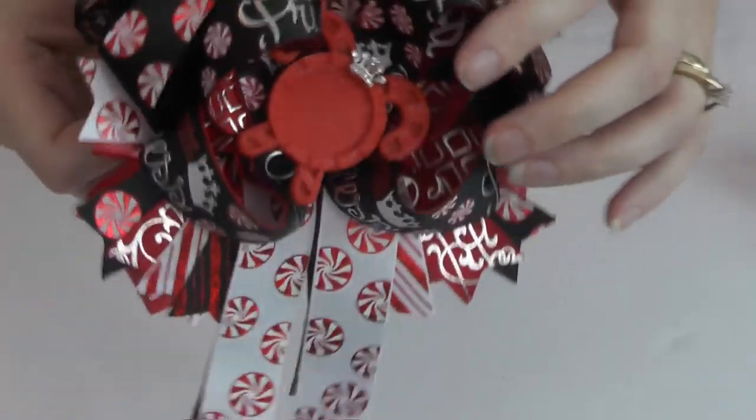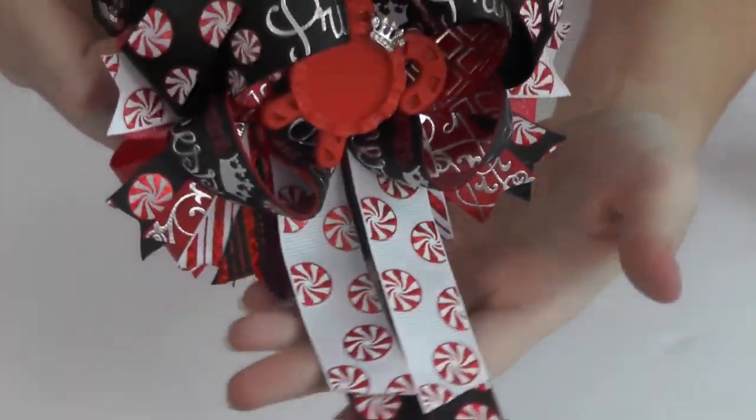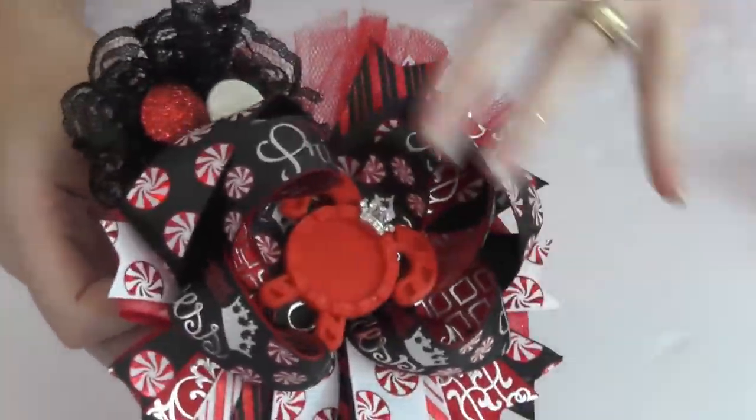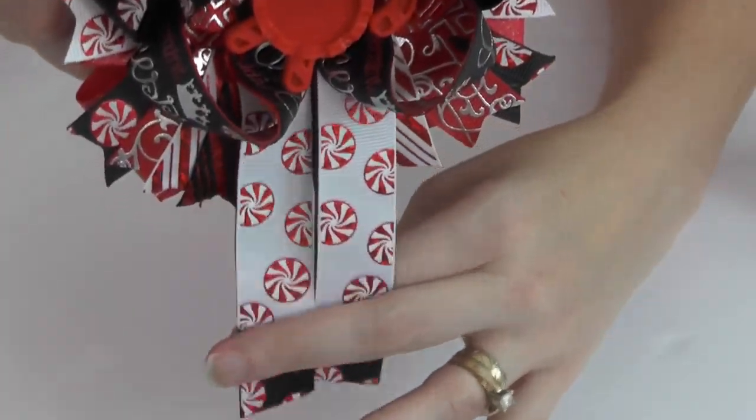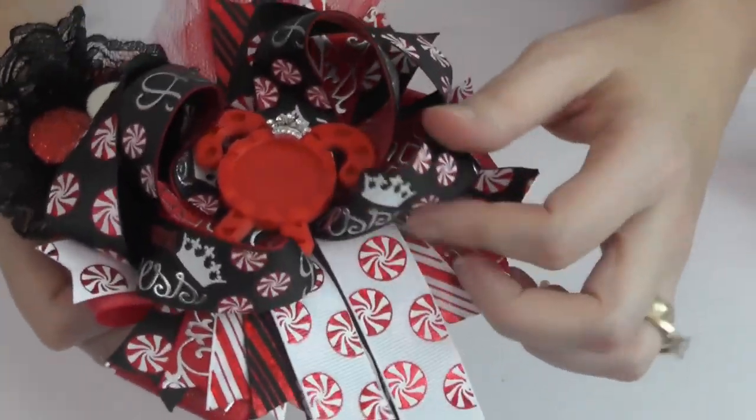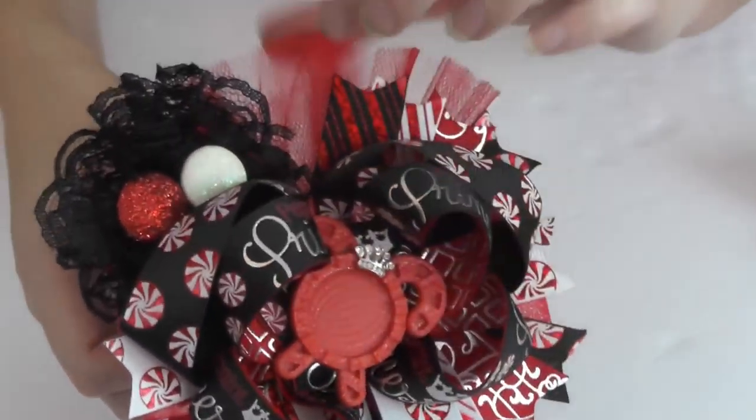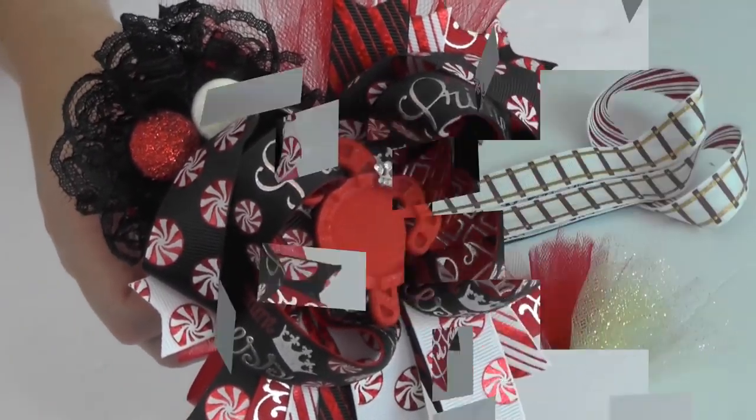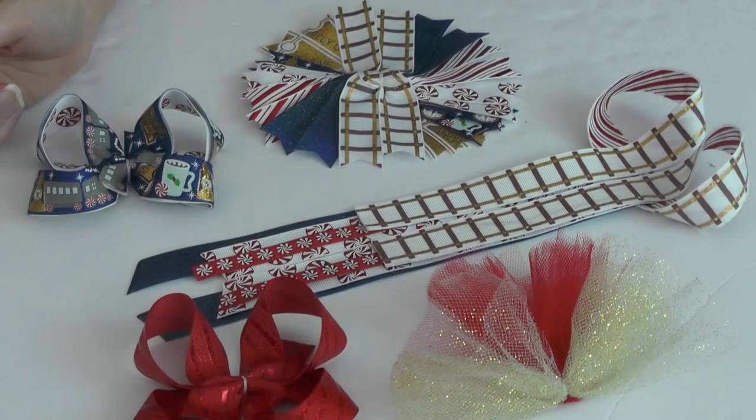I promised that I would share how I made this Peppermint Princess bow or the style that I used. The tails are straight in the middle. This is actually a Twisted Boutique bow on top, so that's exactly what I'm going to do.